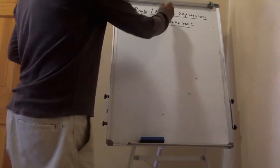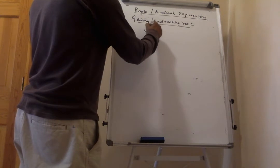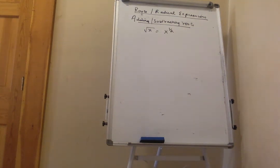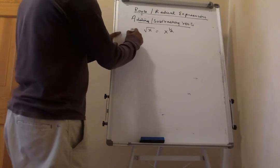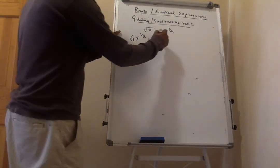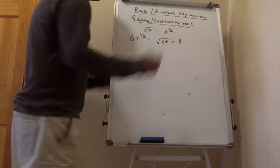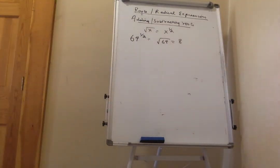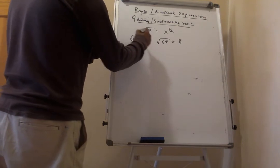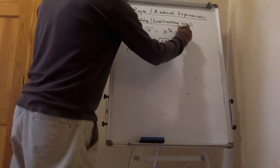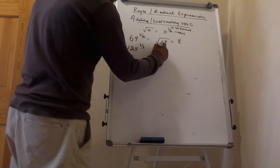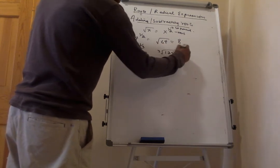Now let's use the definition of radical expressions. The square root of x means x to the power of one-half. Reversing this: 64 to the power of one-half means the square root of 64, which is 8. And 125 to the power of 1 over 3 means the cube root of 125, which is 5.